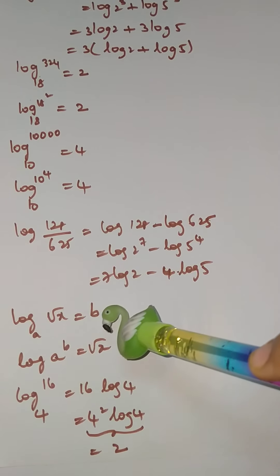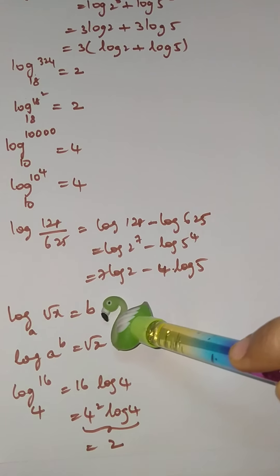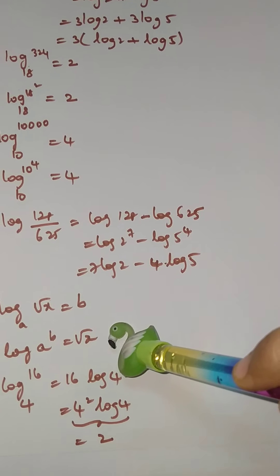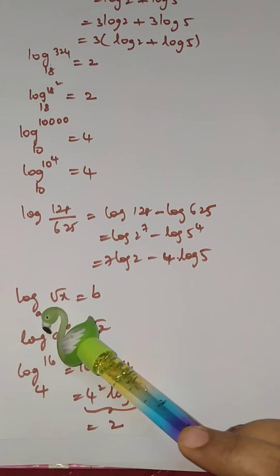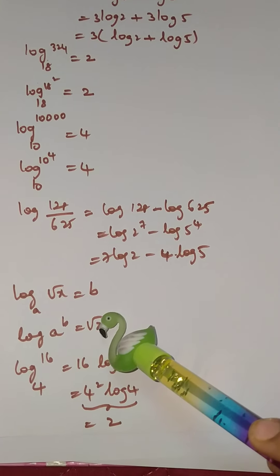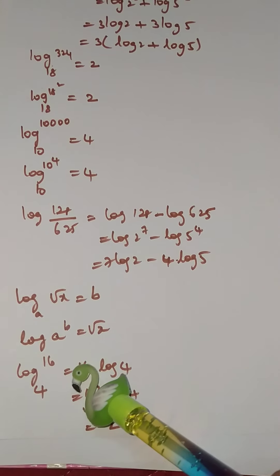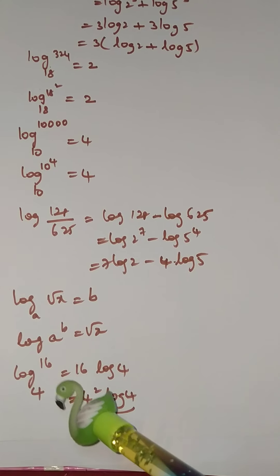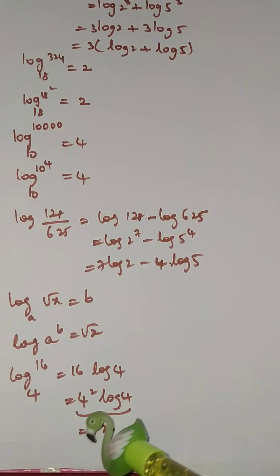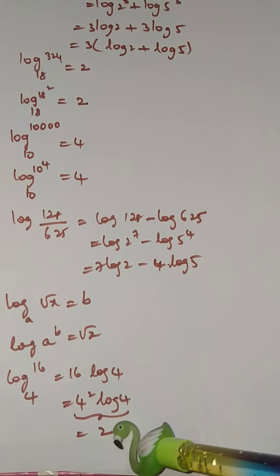If log_a(√x) = b, we write this as a^b = √x. For log₄(16): we write 16 = 4², so log₄(16) = log₄(4²) = 2·log₄(4) = 2×1 = 2.